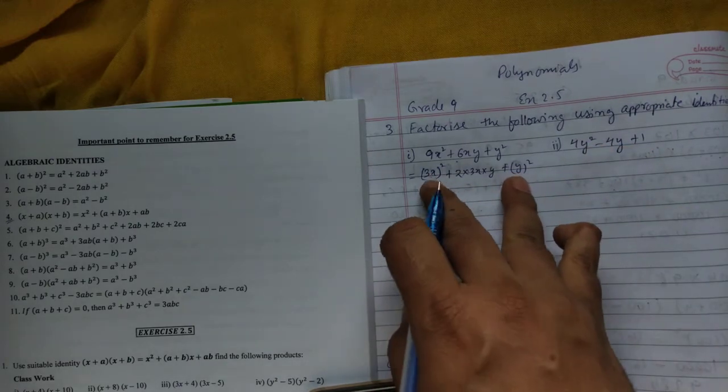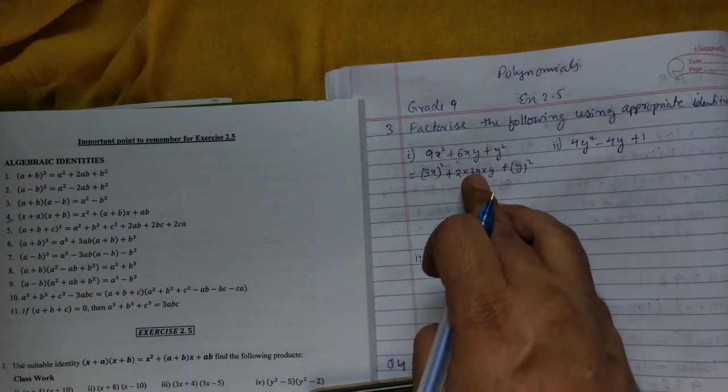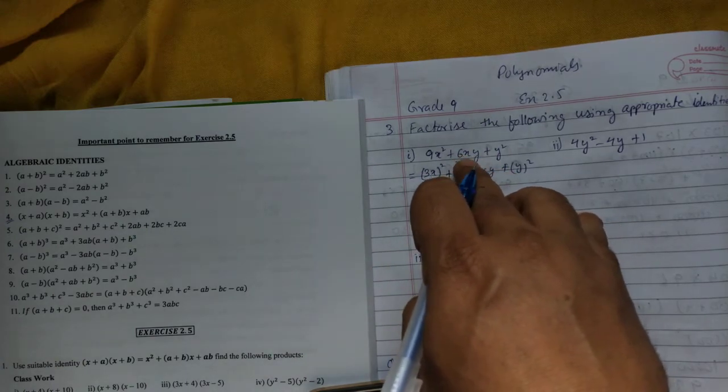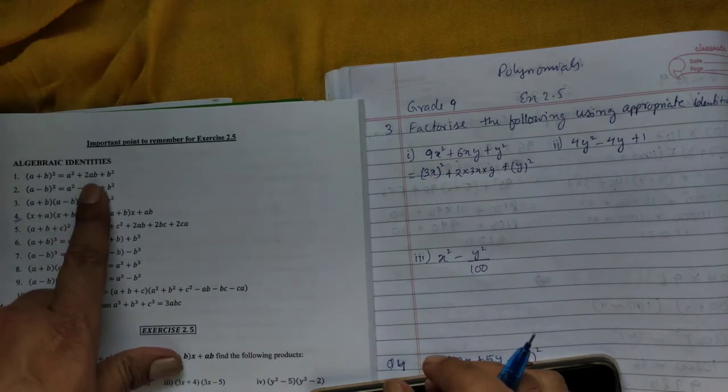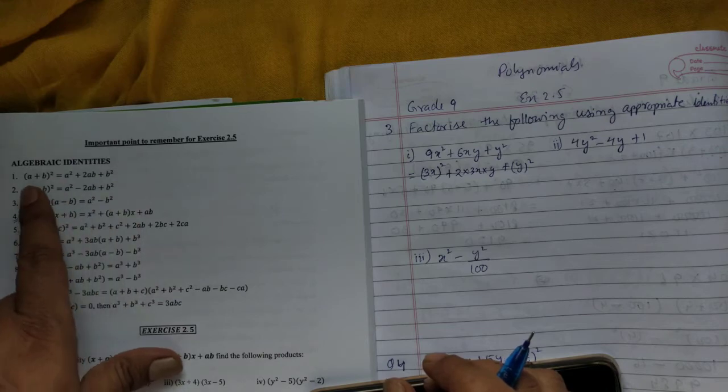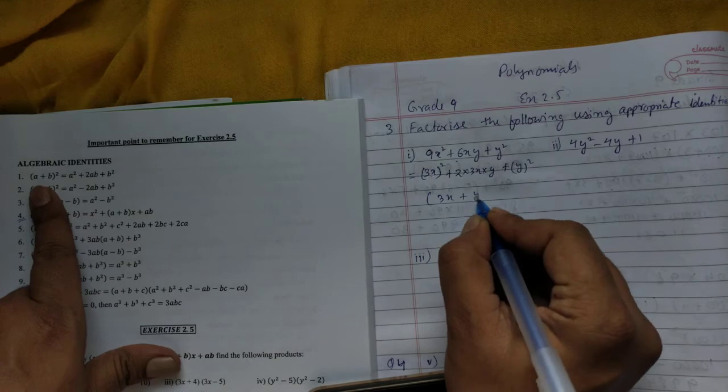6xy, which matches the middle term. That means this is in the form A² + 2AB + B², so we can write (A + B)². Your A is 3x and B is y, so the answer is (3x + y)². Similarly, for the next problem, first make perfect squares: (2y)²